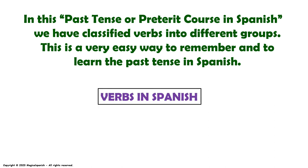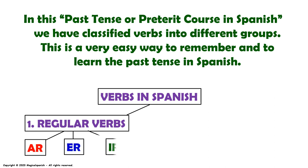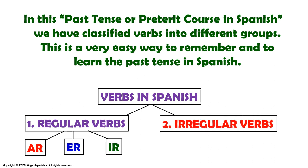Let's begin with the verbs in Spanish. We are going to classify them into regular verbs — verbs that have the same regular conjugation. We have rules that we can follow, and they are going to be conjugated the same way. These verbs are very easy to learn because they follow the same rules, and they end in AR, ER, or IR. The second group is going to be the irregular verbs — those verbs with a very special conjugation in past tense.